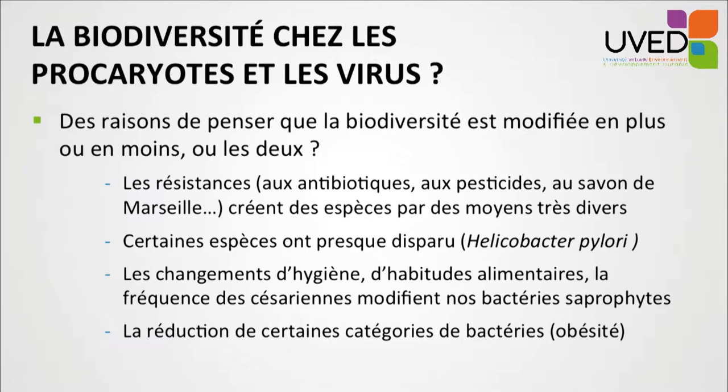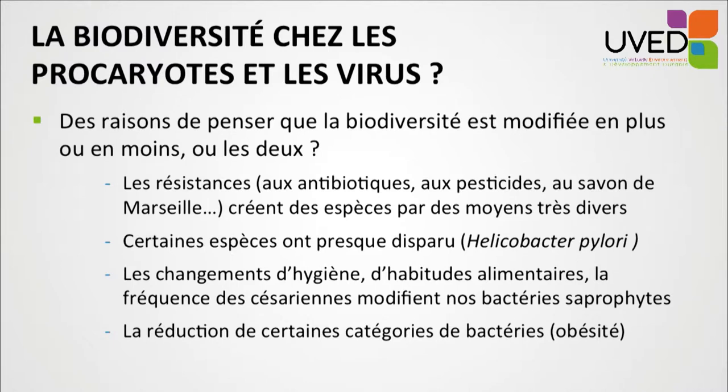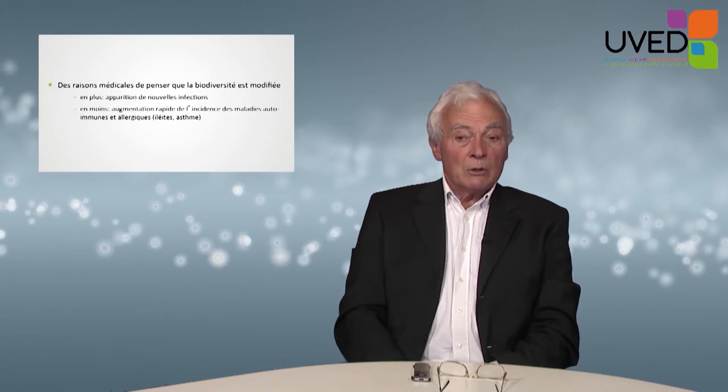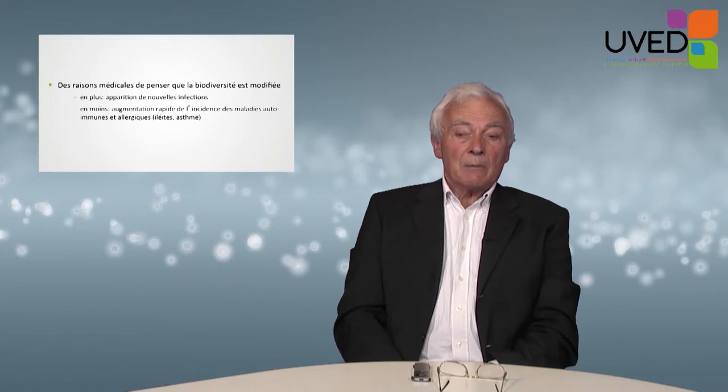Some species have almost disappeared. Helicobacter pylori, the bacteria naturally present in our stomach, are disappearing in many people — and fortunately so, because this bacterium causes stomach ulcers and even stomach cancer. Changes in lifestyle and eating habits play a role. The number of C-sections also changes the bacteria we live with; babies born by C-section no longer come in contact with bacteria in the mother's vagina, so the child is born more sterile than it should be. Research published in Nature by INRA also shows that some bacteria tend to disappear in obesity.